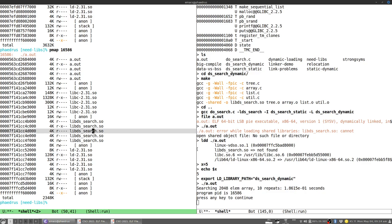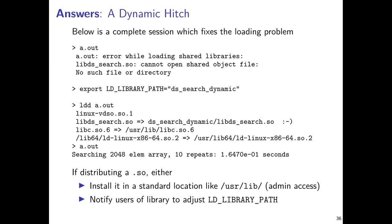Libraries that are used by many programs — like libc and the loader — stay in memory as long as other programs need them, while a unique library like libds_search.so would be removed when no programs are using it. This dynamic linking behavior is not unique to Linux. On Windows, the equivalent concept led to the notorious 'DLL hell' — where upgrading or removing old versions of dynamically linked libraries (.dll files) would cause many programs to stop functioning.